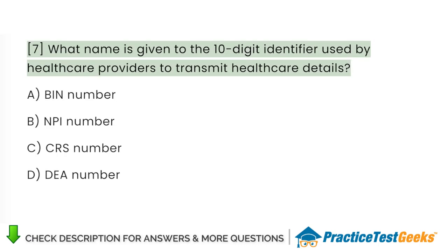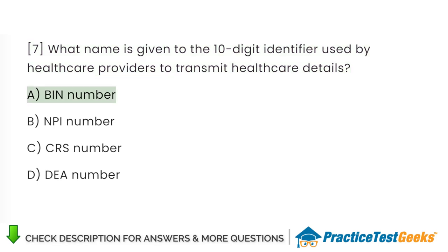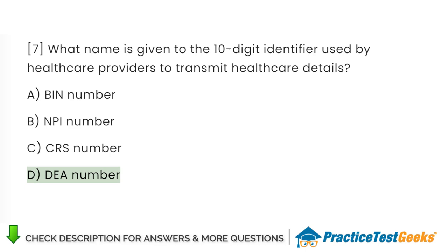What name is given to the 10-digit identifier used by healthcare providers to transmit healthcare details? A. BIN number. B. NPI number. C. CRS number. D. DEA number.